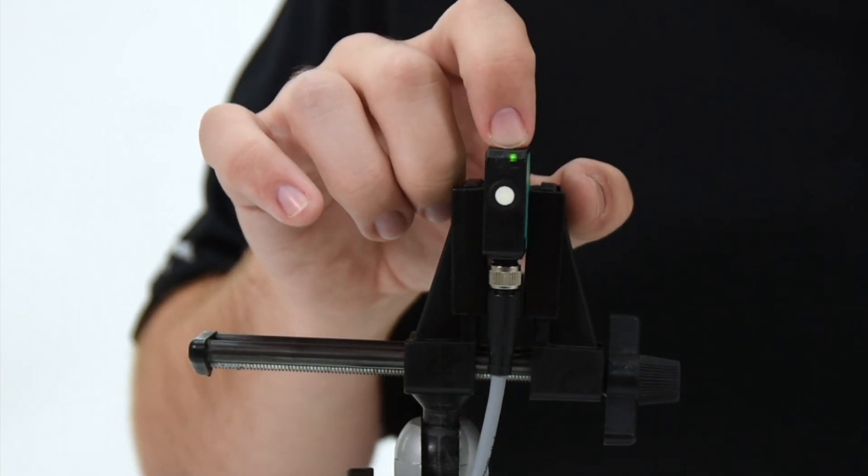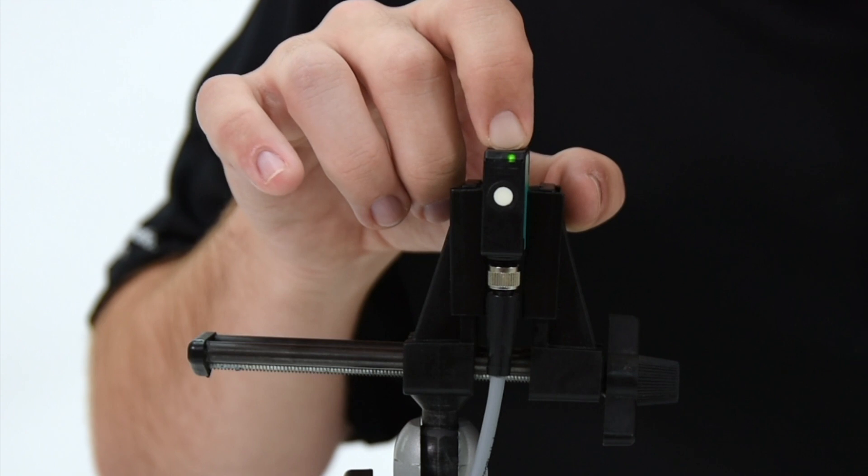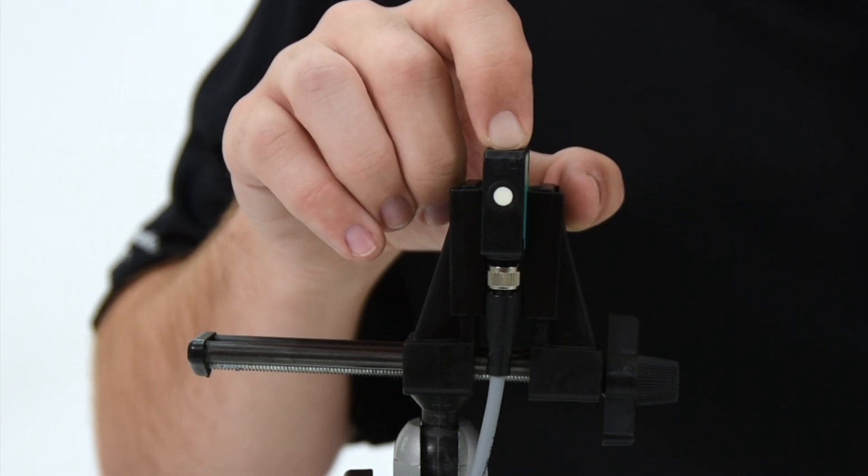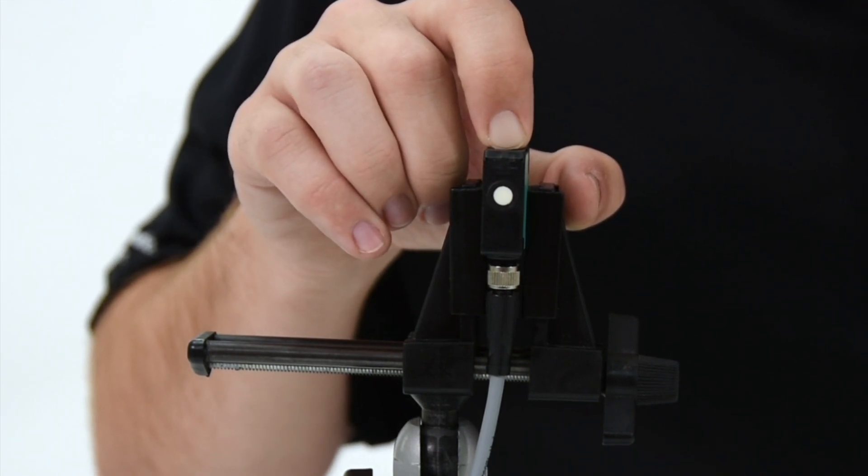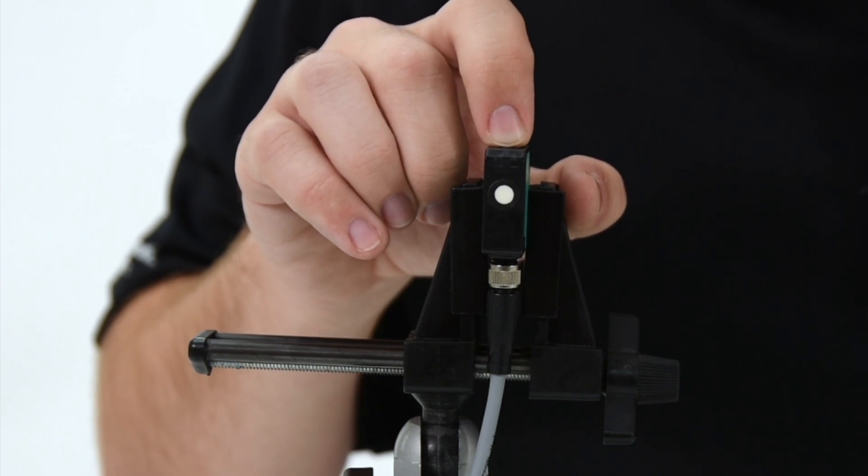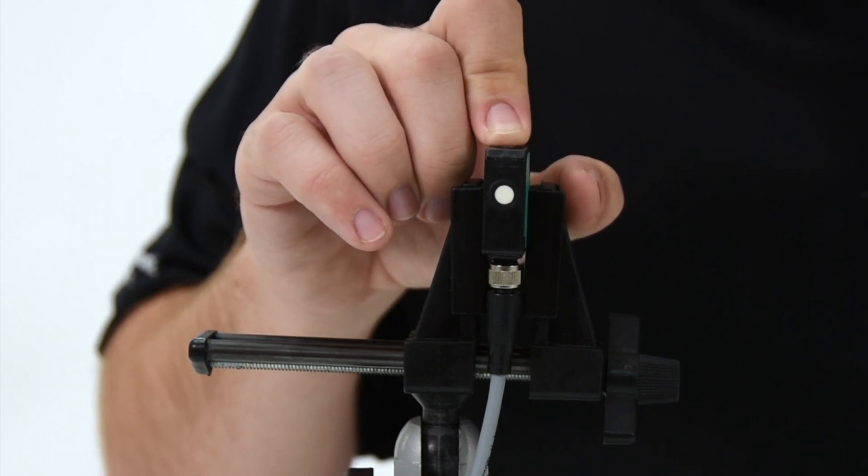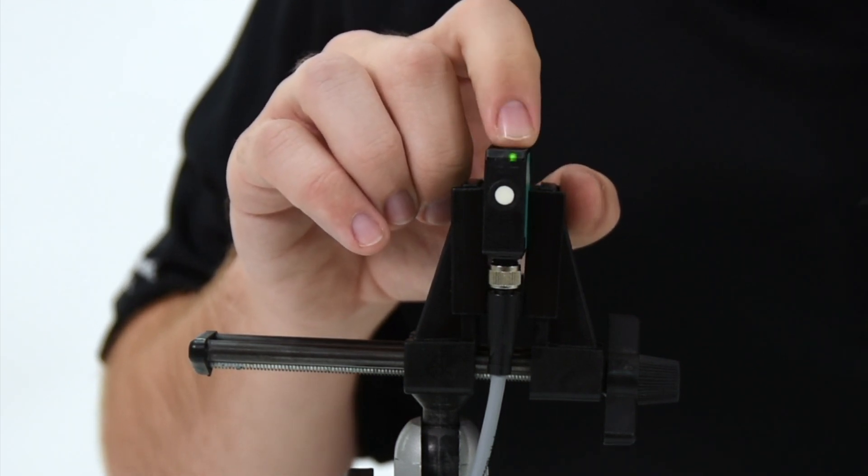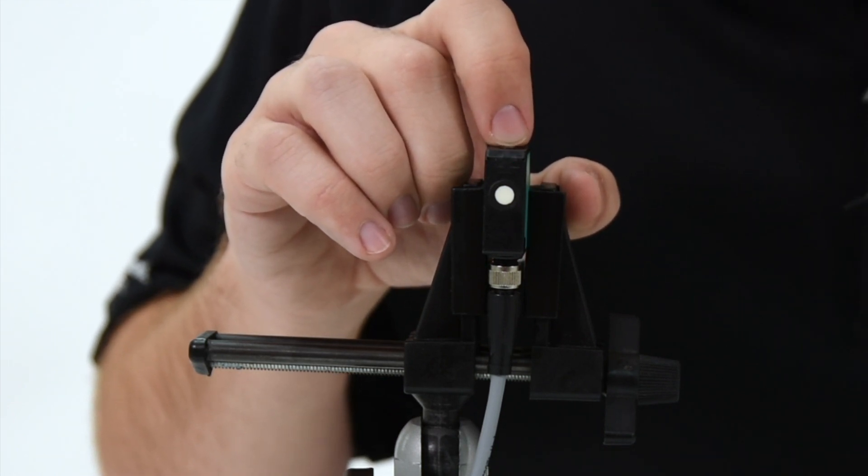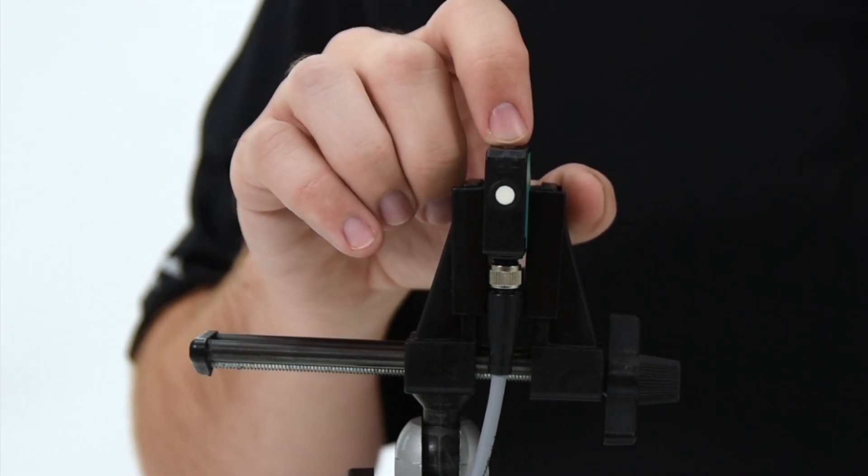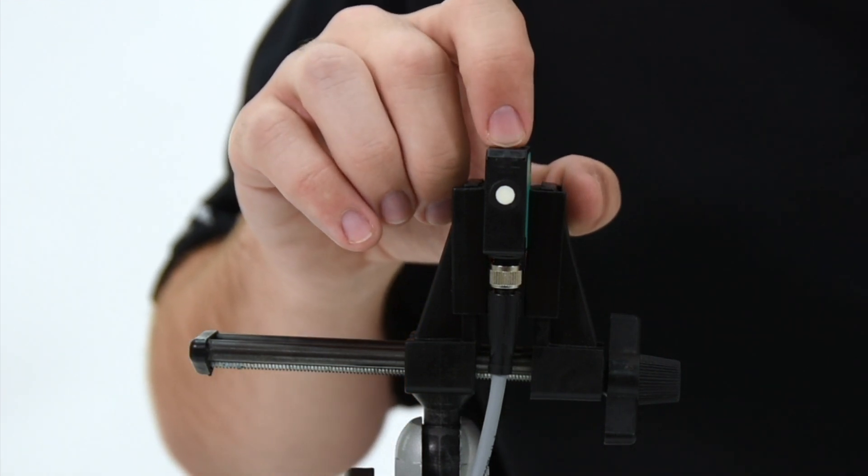Now to begin programming, we will hold the button for approximately 5 seconds. You will see it flash orange, and then once it begins to flash green, we are ready to begin. So now that it is flashing green, we are setting the switching mode for this sensor. Flashing three times indicates that we are in hysteresis mode.